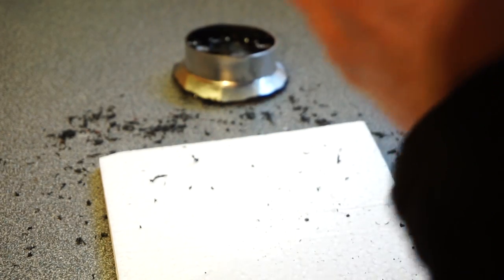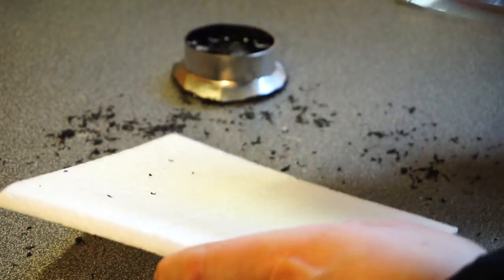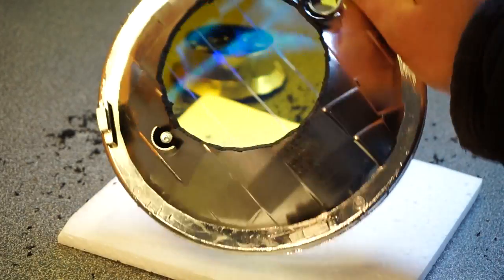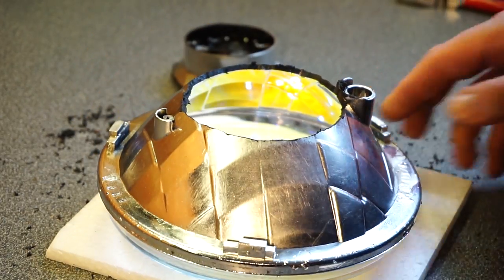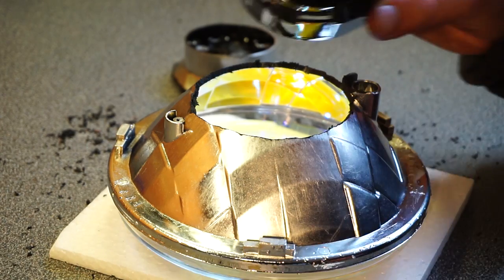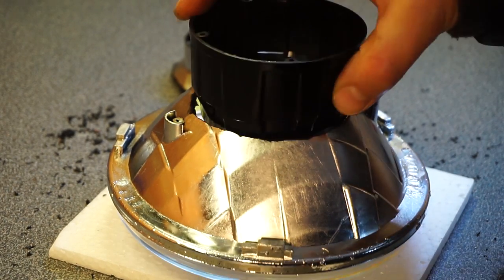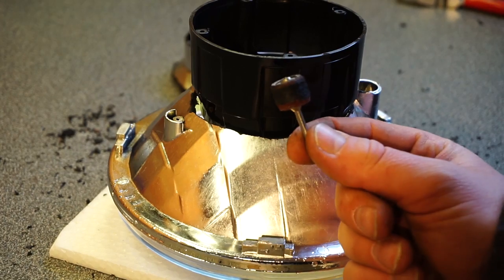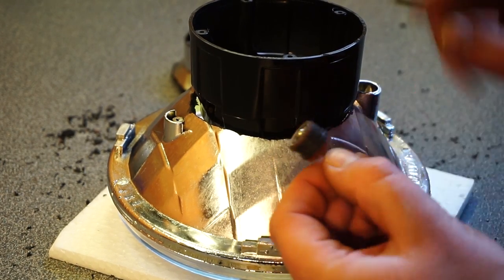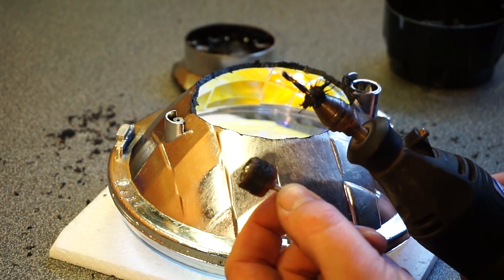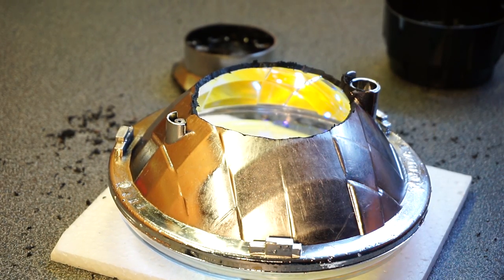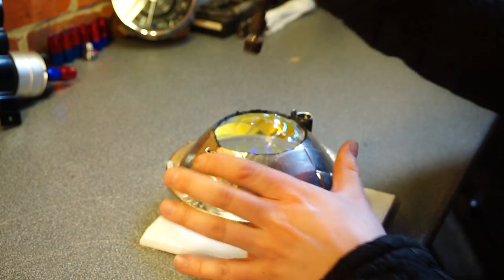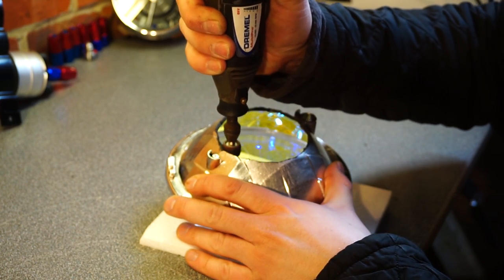So basically, we now need to make that hole bigger, slowly, to a point where the projector light will fit. At this point, you can see it's clearly too small of a hole. So we need to use a sanding drum, thus, on the end of my Dremel.